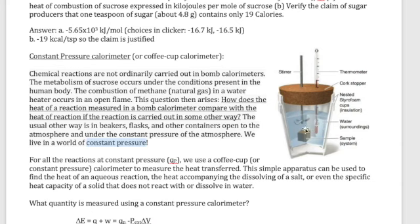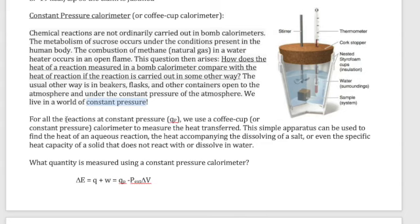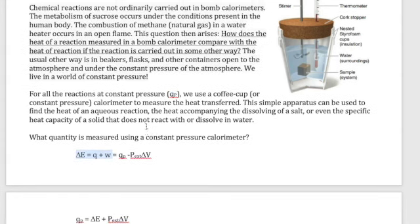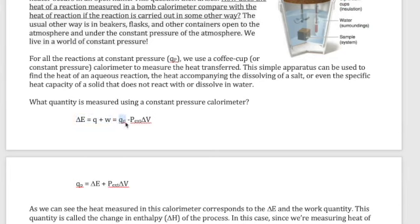In the coffee cup calorimeter, your reaction has both reactants turning into products, surrounded by solution — the solvent. You have a thermometer and a stirrer to drive the reaction and measure the temperature change. That change in temperature corresponds to the surroundings' temperature, which you then relate back to the reaction's heat. The heat measured at constant pressure is given the symbol q-sub-p.